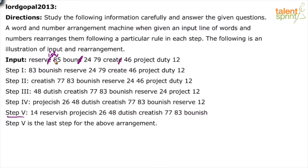Looking at the numbers: the output has 14, 26, 48, 77, 83, but not a single number from the input — 85, 24, 79, 46, 12 — is common with the output. Some numbers are close: 85 has become 83, 24 has become 26, 79 has become 77, 46 has become 48, and 12 has become 14. So both words and numbers are being changed during the rearrangement.